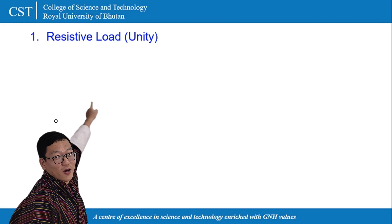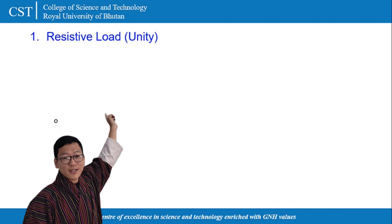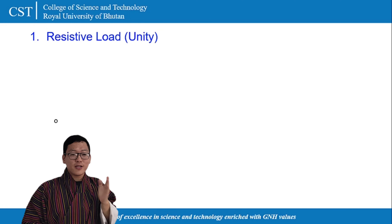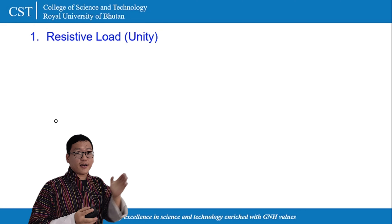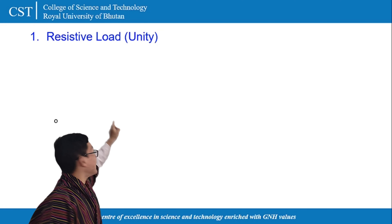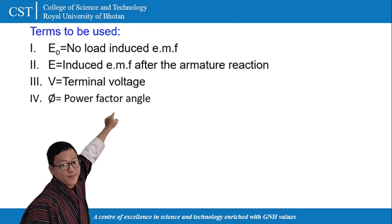Number one, we are going to talk about resistive load. As we already know that in the resistive load the voltage and the current are in phase, and that's why it has a power factor of unity.